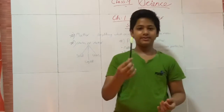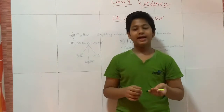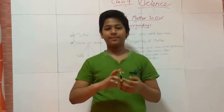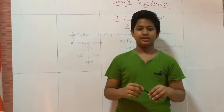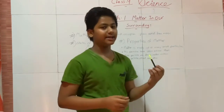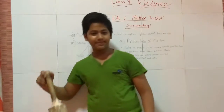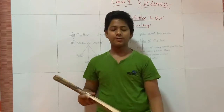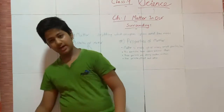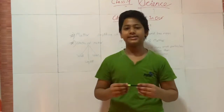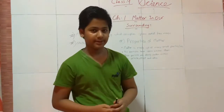Like for example, this pen. This pen is having a mass, and it is occupying a space, so it is matter. For example, here is a bat. It is also occupying a weight, means mass, and it also occupies space, so it is also called matter.